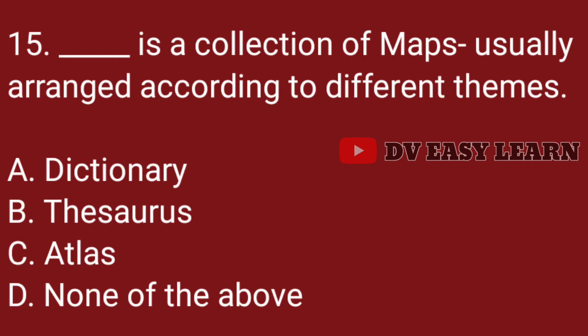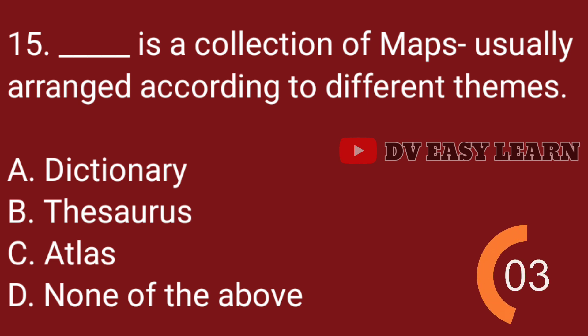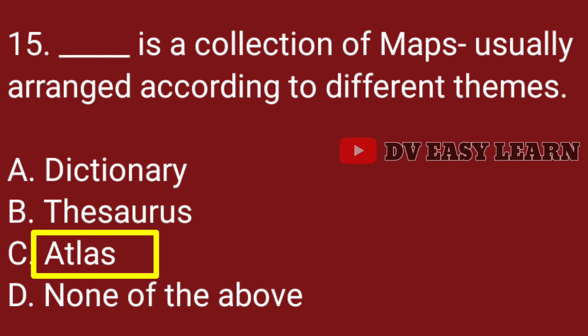Question no. 15. A collection of maps neatly arranged according to different themes is called: Correct answer: Atlas.